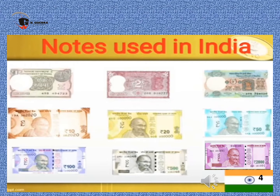Let us now look at the notes used in India: 1 rupee note, 2 rupee note, 5 rupees note, 10 rupees note, 20 rupees note, 50 rupees note, 100 rupees note, 200 rupees note, 500 rupees note, and 2000 rupees note. The size and colour of all these currency notes are different from one another.